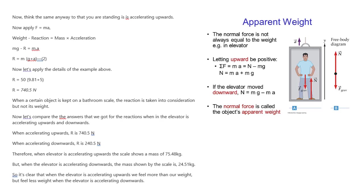Therefore, when the elevator is accelerating upwards the scale shows a mass of 75.48 kilograms. But, when the elevator is accelerating downwards, the mass shown by the scale is 24.51 kilograms. So it's clear that when the elevator is accelerating upwards we feel more than our weight, but feel less weight when the elevator is accelerating downwards.